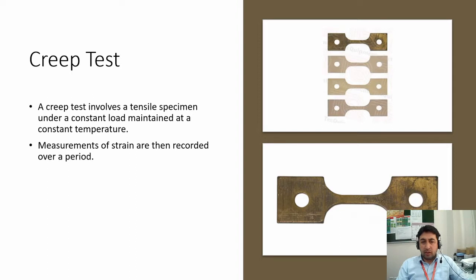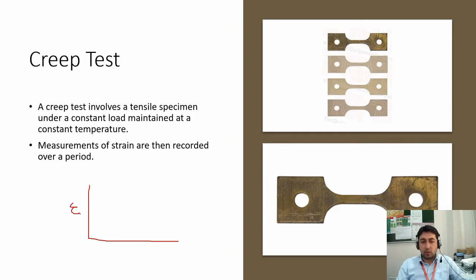The measurement of strain is then recorded over a period of time. Since stress is constant, we plot strain versus time — not stress. So with respect to time, we plot the strain or the extension. We use the tensile specimen for conducting the creep test as well.